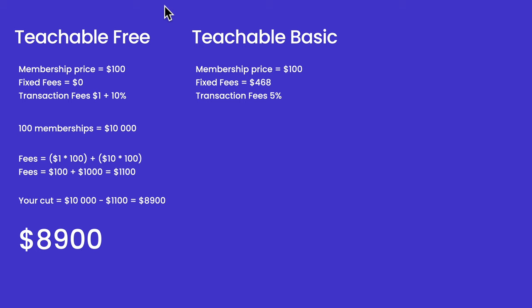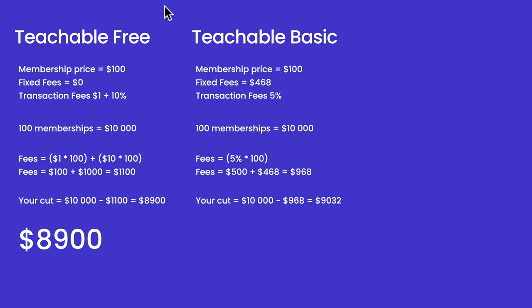Now let's move to the Basic plan. Same membership price, but now we have fixed fees of $468 — that's $39 per month — plus transaction fees of 5% per transaction. So the total fees come to $968 when we add fixed and transaction fees together. On $10,000 in revenue, your cut will be $9,032.